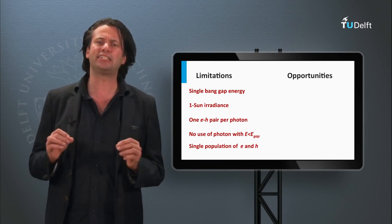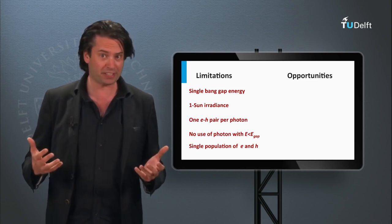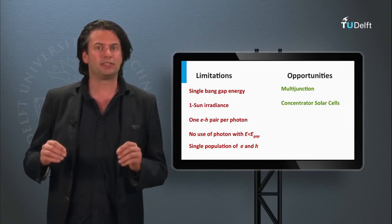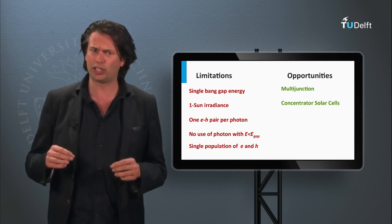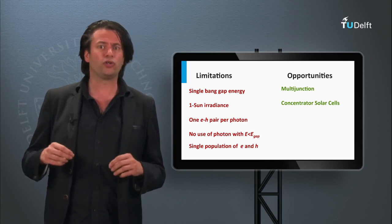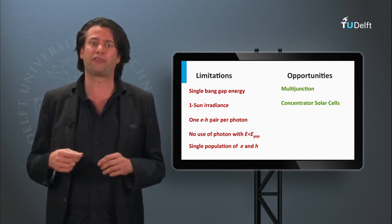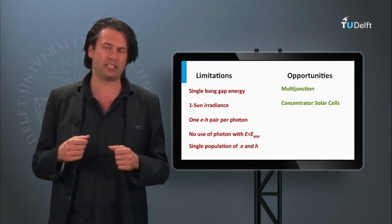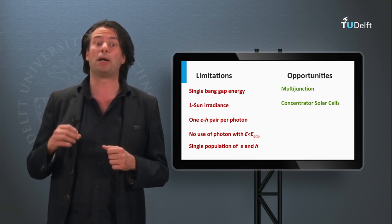Tackling these fundamental limitations means that we can develop PV concepts with conversion efficiencies that can surpass the Shockley-Queisser limit. Tackling the first problem has been discussed last week. Both the III-V semiconductor PV technology and the thin-film silicon technology use the concept of multi-junctions — several solar cell junctions stacked upon each other with a response to different parts of the solar spectrum. The concentrated technology is applied on multi-junctions based on III-V semiconductor materials, and as a result, the highest conversion efficiencies of 44% have been achieved, exceeding the Shockley-Queisser limit by more than 10%.